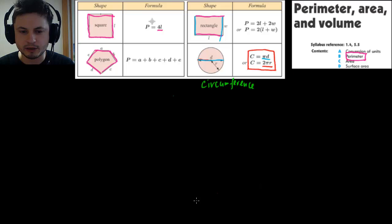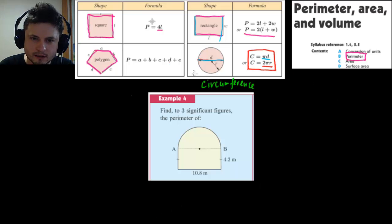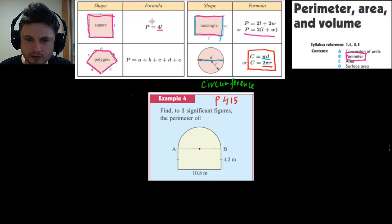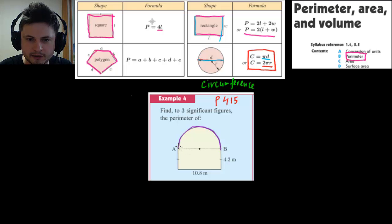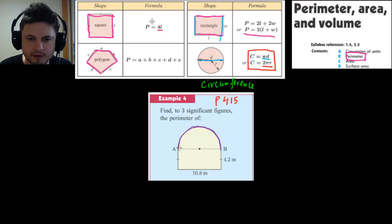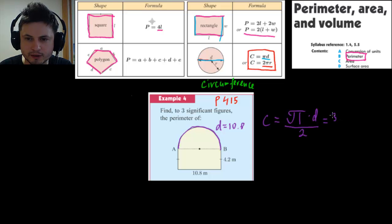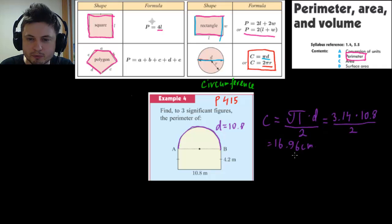Let's try example four from page 415: find the perimeter of this figure. We have a semicircle — half of a circle. We don't have a radius but we do have a diameter of 10.8. Using the formula circumference equals pi times D, but since it's a semicircle we divide by two: pi times 10.8 divided by two gives us 16.96 centimeters for the semicircle perimeter.